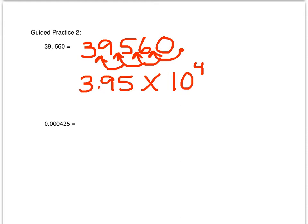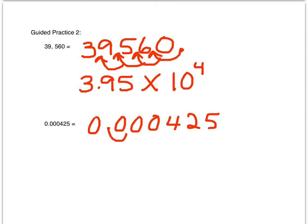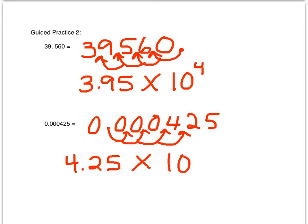In our next example, 0.000425, we'll move our decimal point to the right four places until we have a number that is greater than or equal to one and less than ten. 4.25 satisfies these conditions, so it will be 4.25 times 10 to the negative fourth power. It is negative four because the number 0.000425 is less than one.